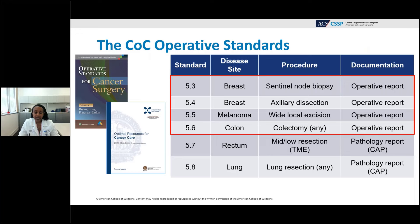There are six COC Operative Standards, 5.3 to 5.8. This webinar focuses on 5.3 to 5.6 — sentinel lymph node biopsy for breast cancer, axillary dissection for breast cancer, wide local excision for melanoma, and colectomy for colon cancer. Standards 5.7 and 5.8 are already being evaluated using the pathology synoptic report. All four standards being discussed today are measured for compliance based on the operative report, specifically critical elements documented in a synoptic format.